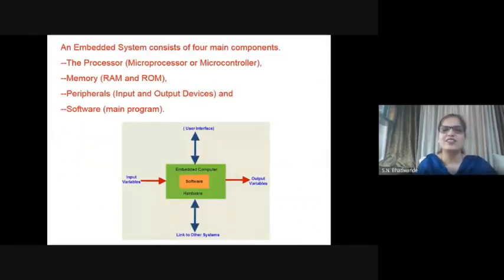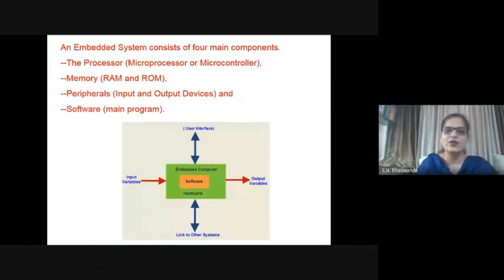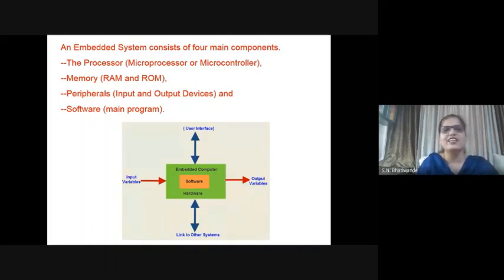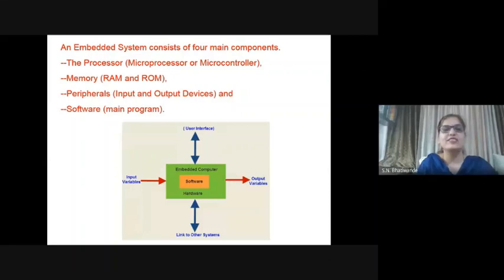An embedded system consists of four main components. Here you can see this is the general structure of an embedded system. The first is the processor, that is a microprocessor or microcontroller, where the program is loaded. Next is memory, that is RAM and ROM. RAM means random access memory and ROM means read only memory. Then there are peripherals, that is input and output devices. Next is software, that is the main program. So all these units are present in the embedded system.